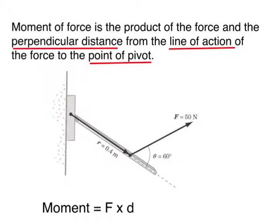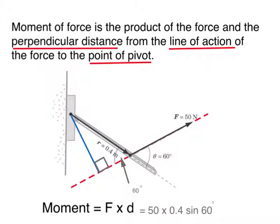For this case of a platform being attached to a hinge as shown, what is the moment given by the force of 50 Newtons? To compute a moment, we must know where the point of pivot is — which is this point here — the perpendicular distance, which is this distance, and the line of action, which is this line here.